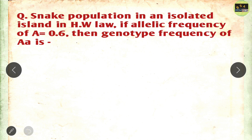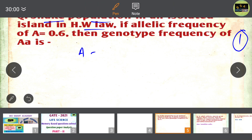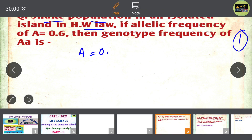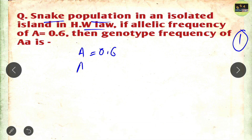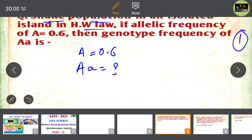This question came from Hardy-Weinberg equilibrium. It is a numerical — the simplest numerical — and it is a one-mark question. It states that the snake population is in Hardy-Weinberg equilibrium on an isolated island, and the allelic frequency of capital A is given as 0.6. We have to calculate the frequency of capital A small a.